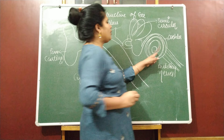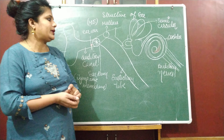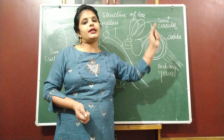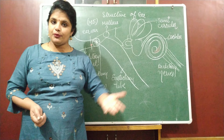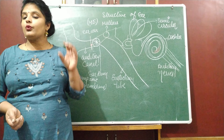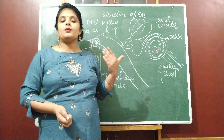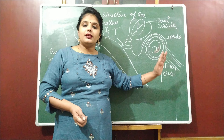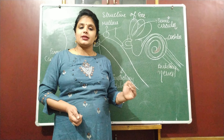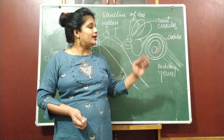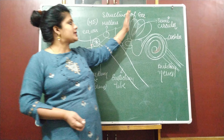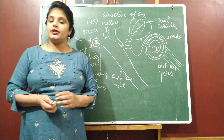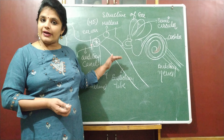From the middle ear, a tube arises and that is called the eustachian tube. The eustachian tube is very important. The middle ear is connected with the throat with the help of the eustachian tube. The function of the eustachian tube is to balance the air pressure on either side of the tympanic membrane.